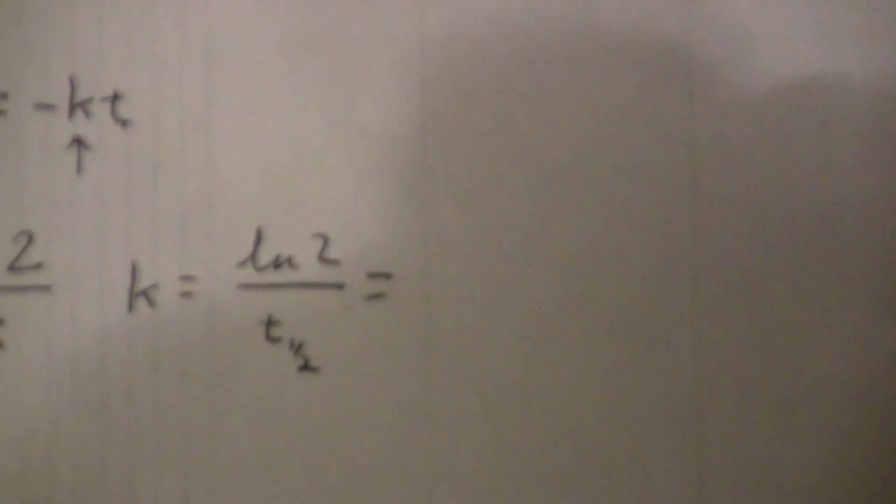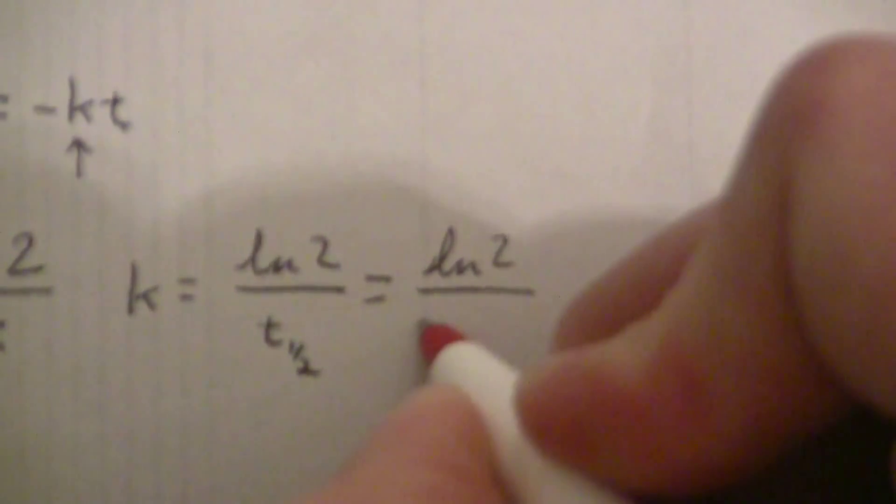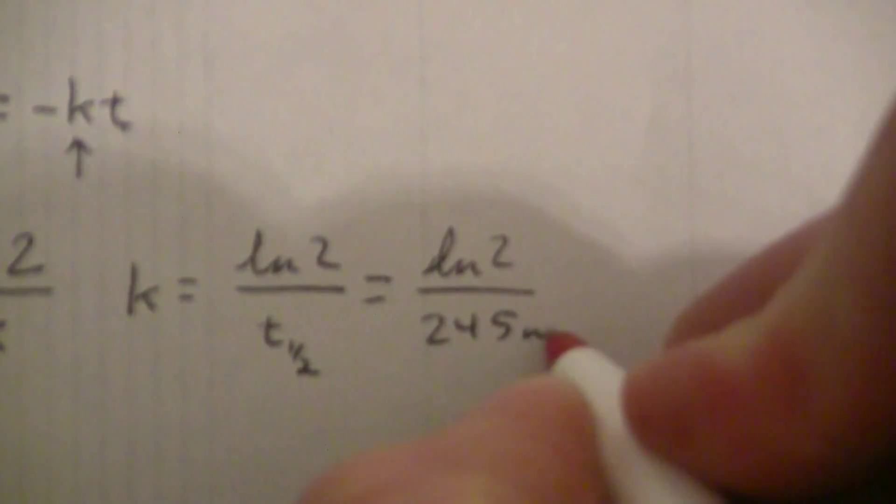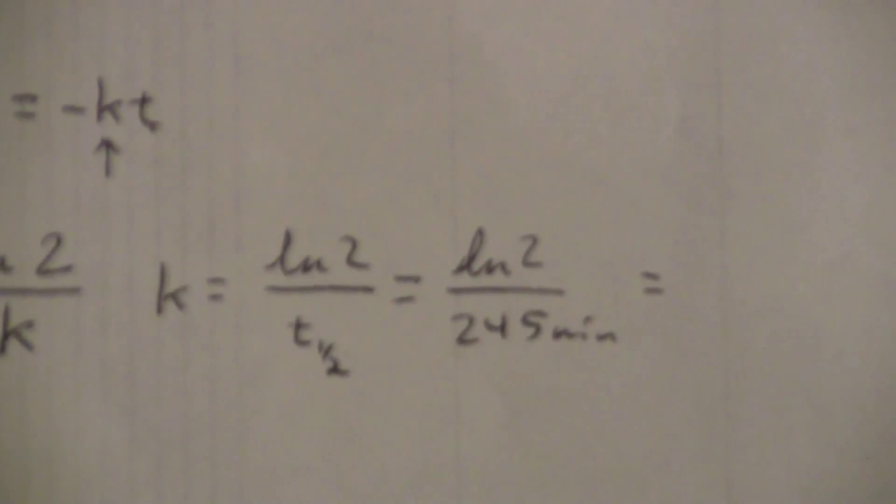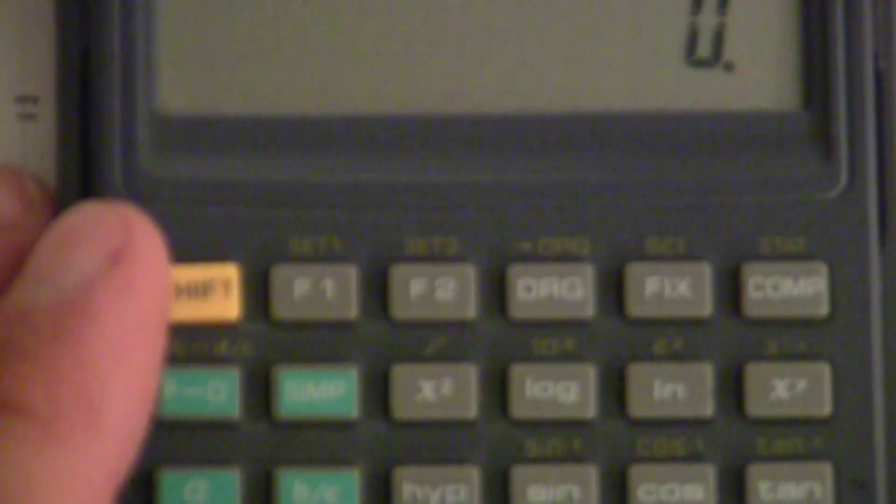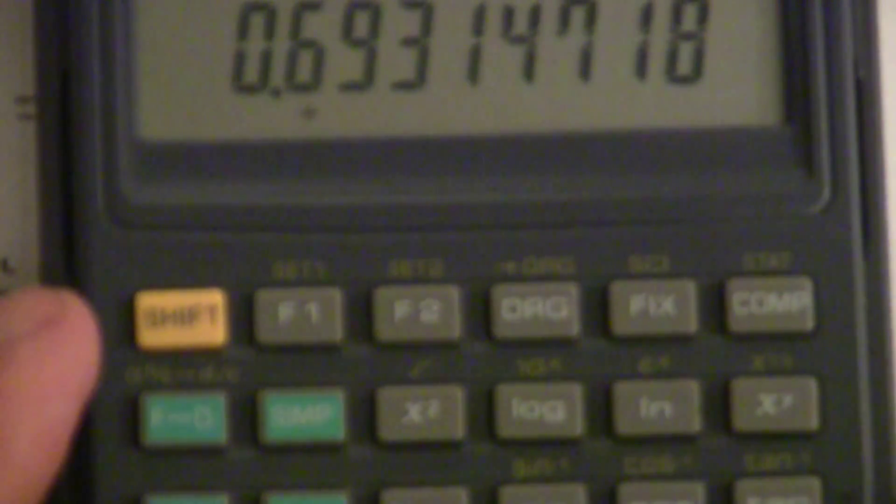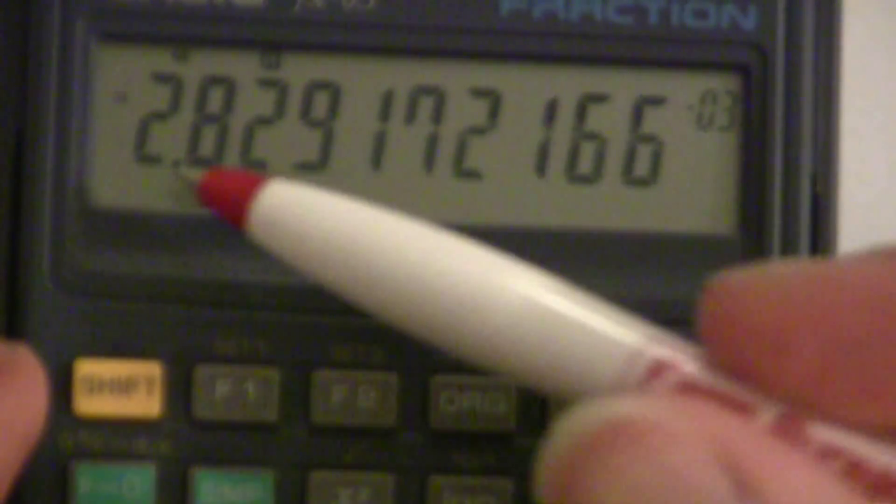So we have LN 2 over 245 minutes, which equals, let's see here, now, I have 2, and then the natural log, it's 0.693, divided by 245.